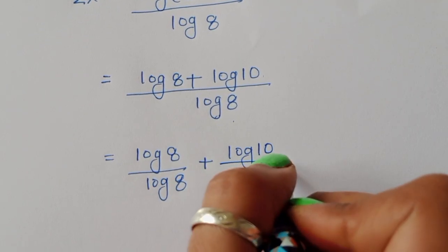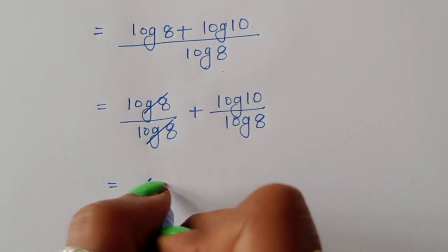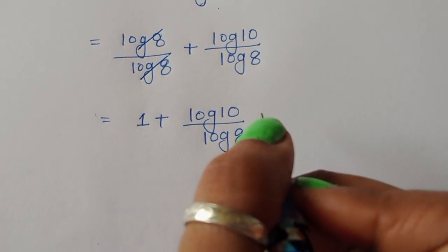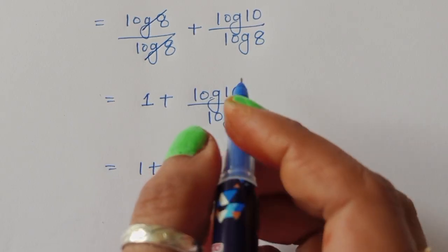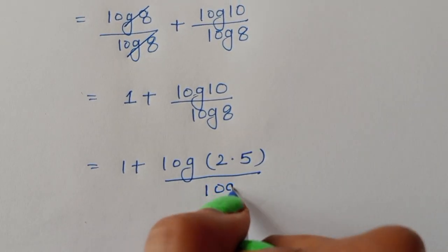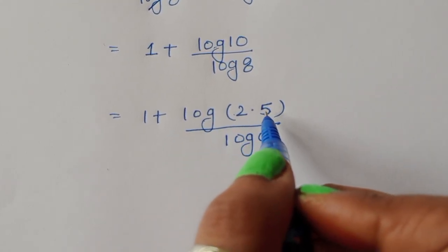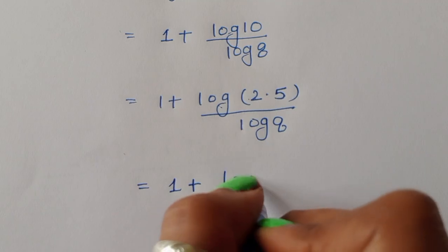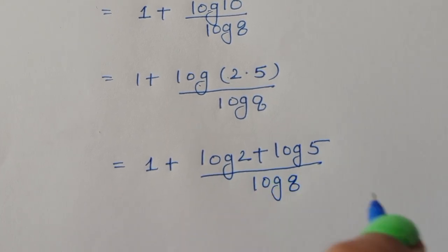So 2x = [log(8) + log(10)] / log(8). We can separate this as log(8)/log(8) + log(10)/log(8). The first term cancels to 1, giving 2x = 1 + log(10)/log(8). Now we write 10 as 2×5, so log(10) = log(2×5) = log(2) + log(5), using the product rule log(a·b) = log(a) + log(b).